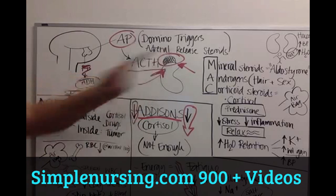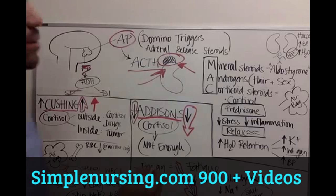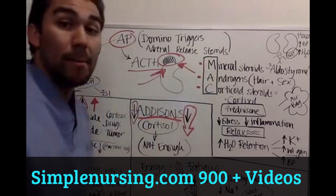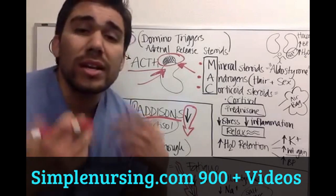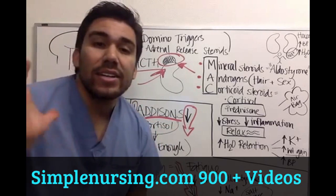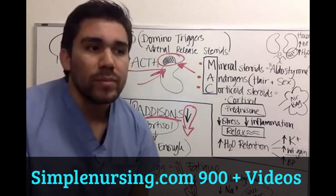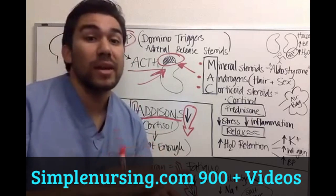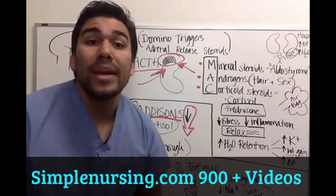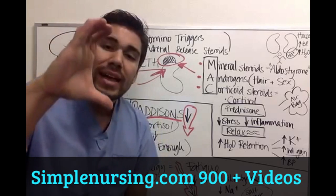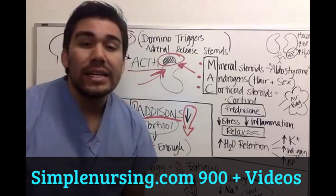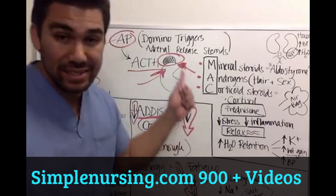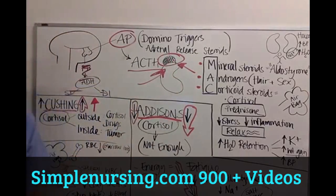So what do your adrenals produce? Your adrenals produce MAC — M-A-C. You can remember MAC as in an Apple computer, a MAC compact where you put your makeup on, or a Big Mac. Just remember that MAC represents what the adrenals on top of your kidneys produce.